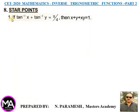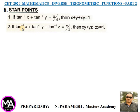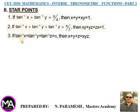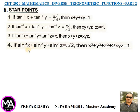Eighth point — star points: (1) If tan⁻¹x + tan⁻¹y = π/4, then x + y + xy = 1. (2) If tan⁻¹x + tan⁻¹y + tan⁻¹z = π/2, then xy + yz + zx = 1. (3) If tan⁻¹x + tan⁻¹y + tan⁻¹z = π, then x + y + z = xyz. (4) If tan⁻¹x + tan⁻¹y + tan⁻¹z = π/2, then x² + y² + z² + 2xyz = 1.